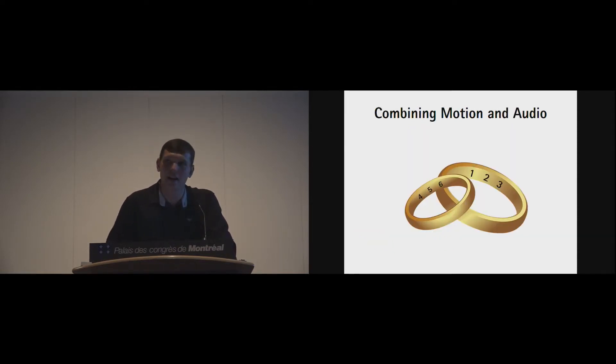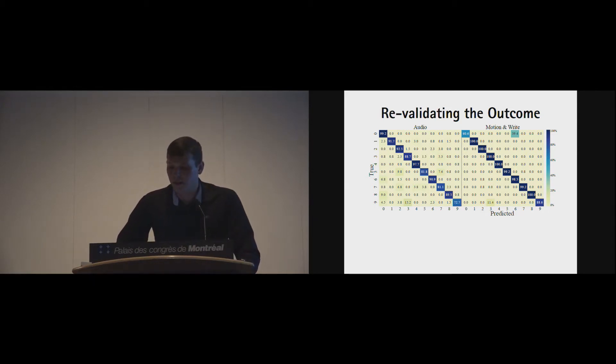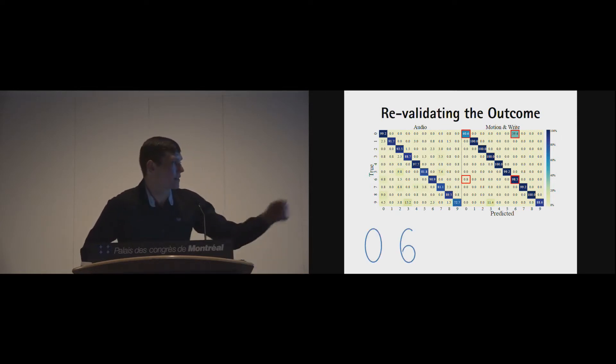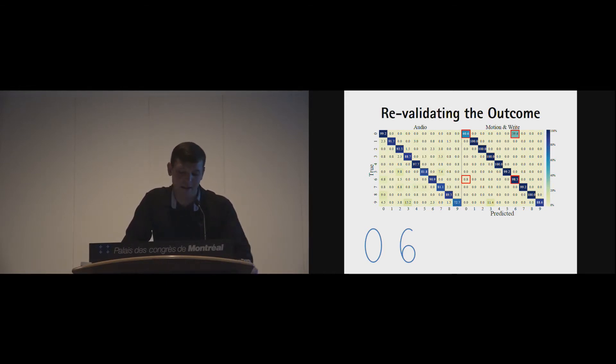But one question remains, how do we combine our motion and audio? We have seen that both sensors together in one network do not perform very well. So what we propose is we revalidate the outcome. We take a closer look at the confusions. As we can see here between 6 and 0, there's a high confusion. This is, as I told before, basically because of the different and really quite similar writing trajectories, which are also writer-dependent. But when we look at the audio data, what was very interesting is that we cannot observe any confusions in that direction.